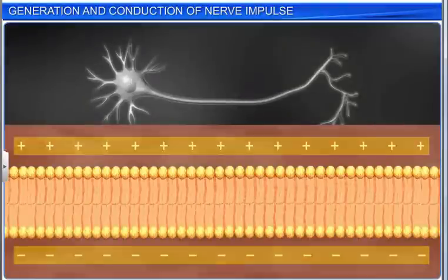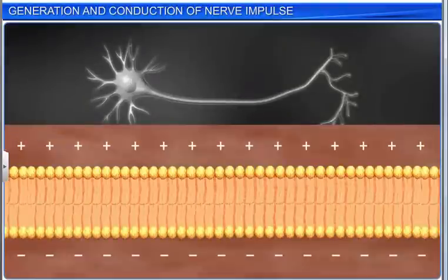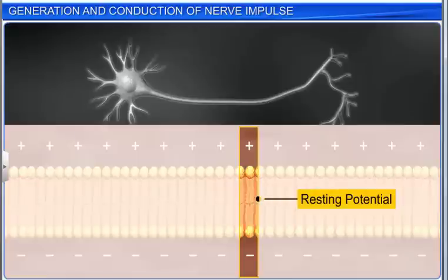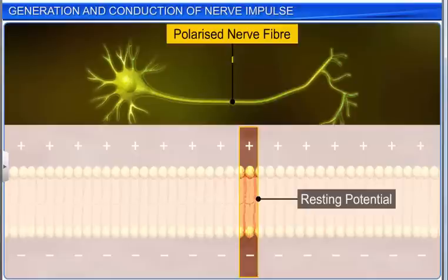This electrical potential difference across the membrane in an unexcited nerve fiber is called resting potential, and the neuron is called a polarized nerve fiber.